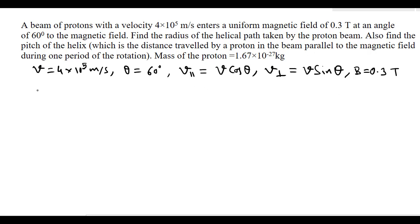The v_perpendicular component is responsible for the circular path. So the radius of the circular path r = m × v_perpendicular divided by q × B, where q is the charge and m is the mass of the proton.